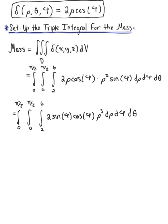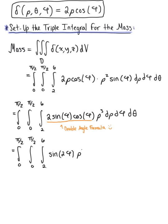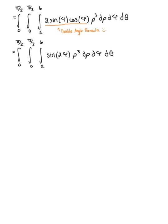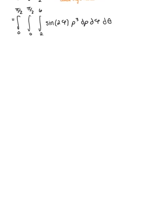Looking at this integrand, we recognize the double angle formula: 2sin(φ)cos(φ) = sin(2φ). We can simplify one step further, writing the triple integral from 0 to π/2 in θ, 0 to π/2 in φ, and 2 to 6 in ρ, of sin(2φ)·ρ³ dρ dφ dθ. If you didn't recognize the double angle formula, a u-substitution would also work for the phi integral, but the double angle formula provides quicker integration.